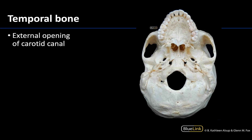This next structure should be a nice review as we covered it in the anterior neck session. Try to locate or identify where the external openings for the carotid canal are located — pause the video if you want to take a second. Here and here are going to be the external openings of the carotid canal, and this is how the internal carotid artery is going to enter the skull. If you didn't get that, you know this is an area to review.